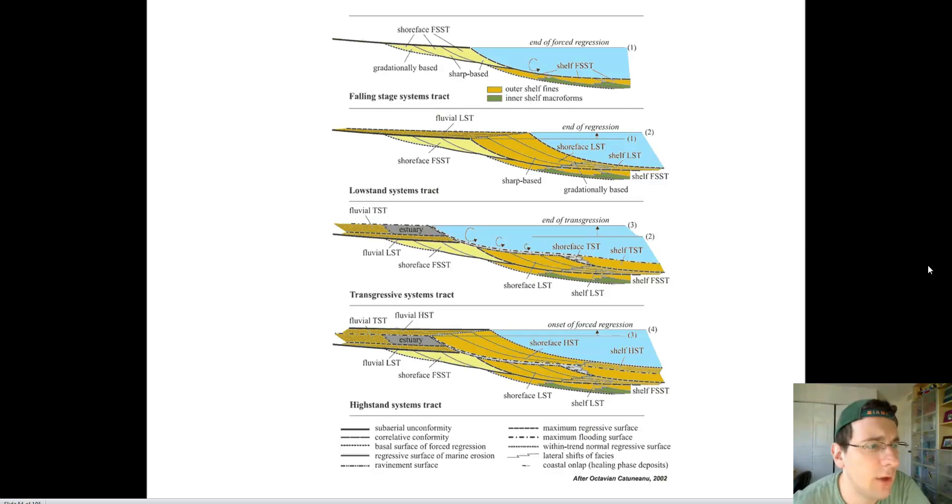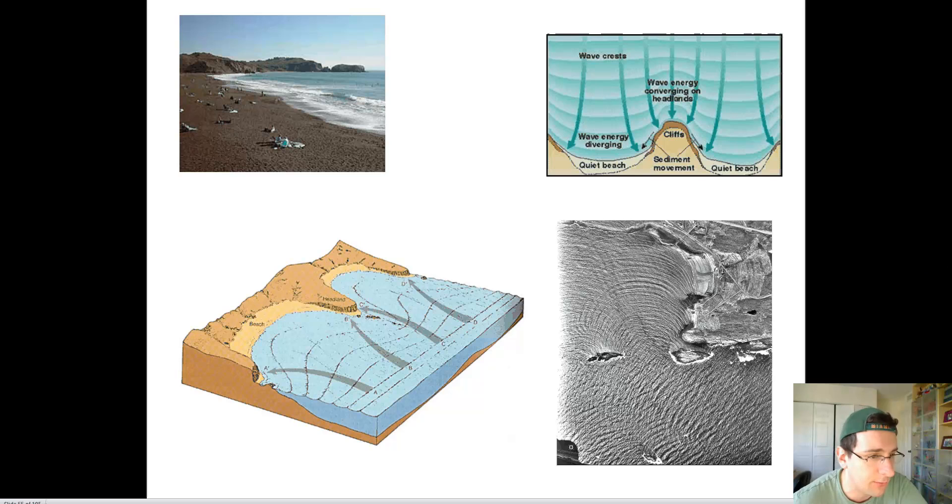Before we do that, I wanted to remind you about the concept of headland resistance and bay formation. Remember we talked in previous videos about what a headland is, which is basically a piece of rock undergoing the same marine erosion shoreline formation we talked about in the previous video. However, it's more resistant than the surrounding rock, so you end up getting these cuts or bays surrounding headlands. This is actually very common.